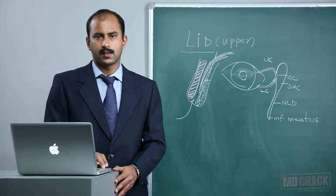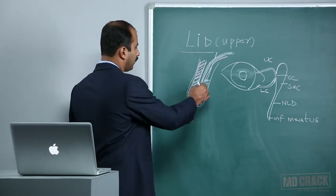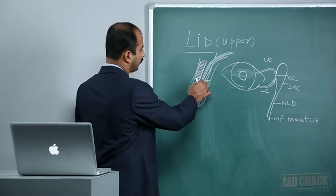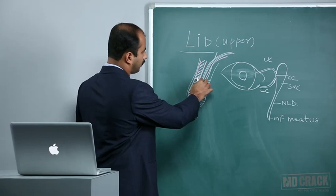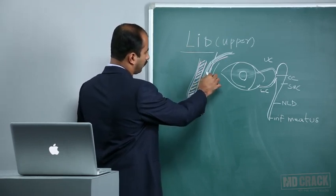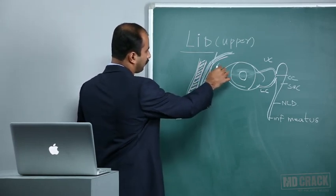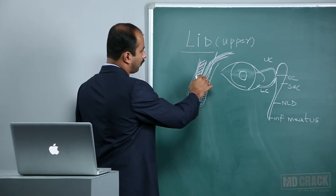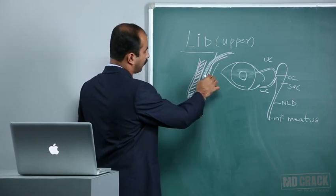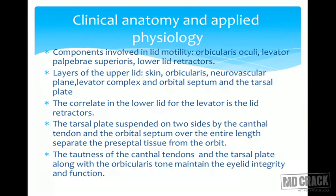Starting with the basic anatomy of the lid, this is the structure of the lid consisting of various layers: from the skin, the orbicularis, the suborbicularis connective tissue or the neurovascular plane, the levator muscles, and the tarsoconjunctival layer. Each layer serves a particular function, and the components involved especially in lid motility are two ones.